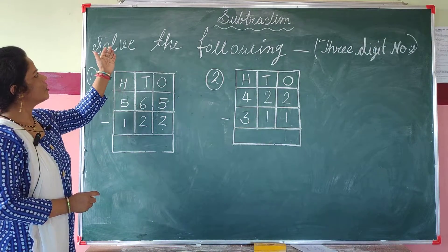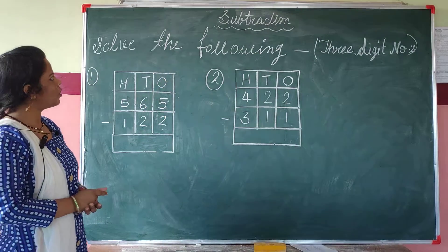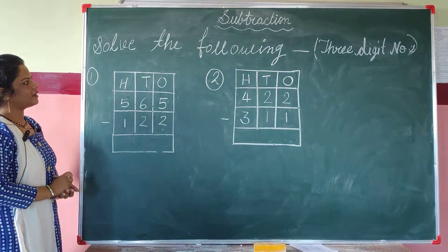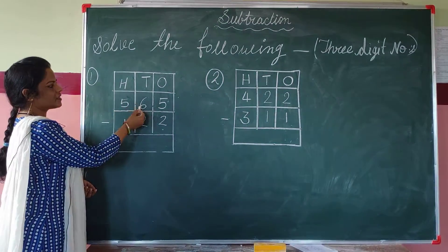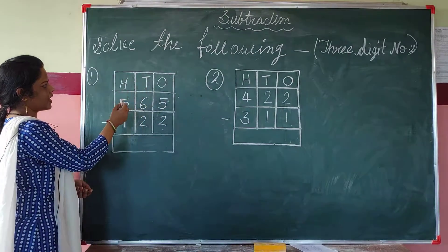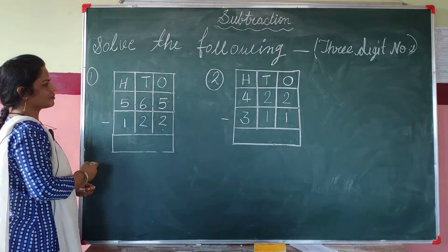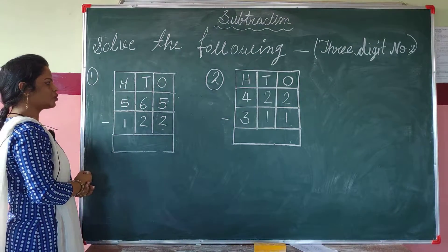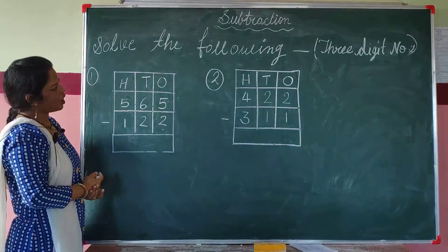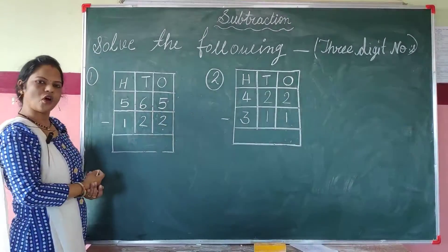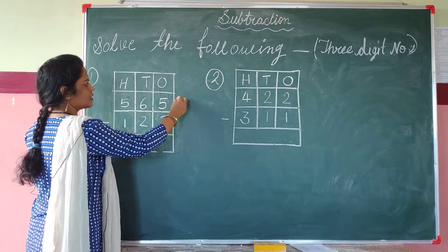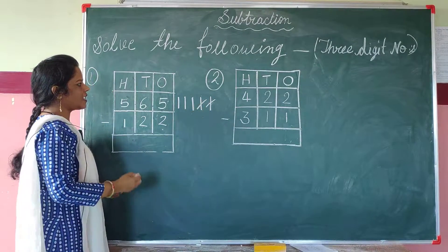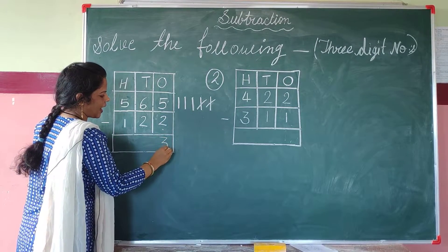Children, look at the blackboard. Solve the following three-digit numbers. We have learned to solve 2-digit subtraction; now we will learn to solve 3-digit subtraction. Look here — this is number 565. 5 is at the one's place, 6 is at the ten's place, and 5 is at the hundredth place. Children, as told before, we always solve from the one's place — the right side — first. This is number 5, so we draw 5 lines: 1, 2, 3, 4, 5. This is number 2 — we cut 2 lines. How many lines are left? 1, 2, 3. We write 3 at the one's place.